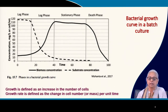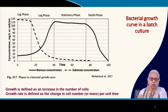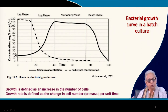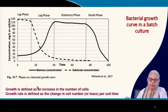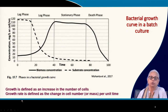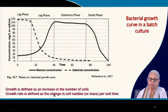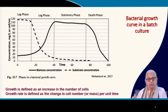When we do experiments in the lab, we generally take a batch culture, add an inoculum, and then monitor the growth of the bacteria. This produces what I call a generic bacterial growth curve. Growth is defined as an increase in the number of cells, and growth rate is the change in number of cells over a period of time.